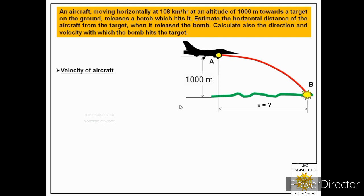The first step is to find the velocity of the aircraft, because that will be the initial velocity of the bomb as a projectile. The velocity of the aircraft is given as 108 km per hour and it is a horizontal velocity because the aircraft is moving horizontally. So the initial velocity of the projectile in the horizontal direction is Vx = 108 km/h, which we convert to 30 meters per second.